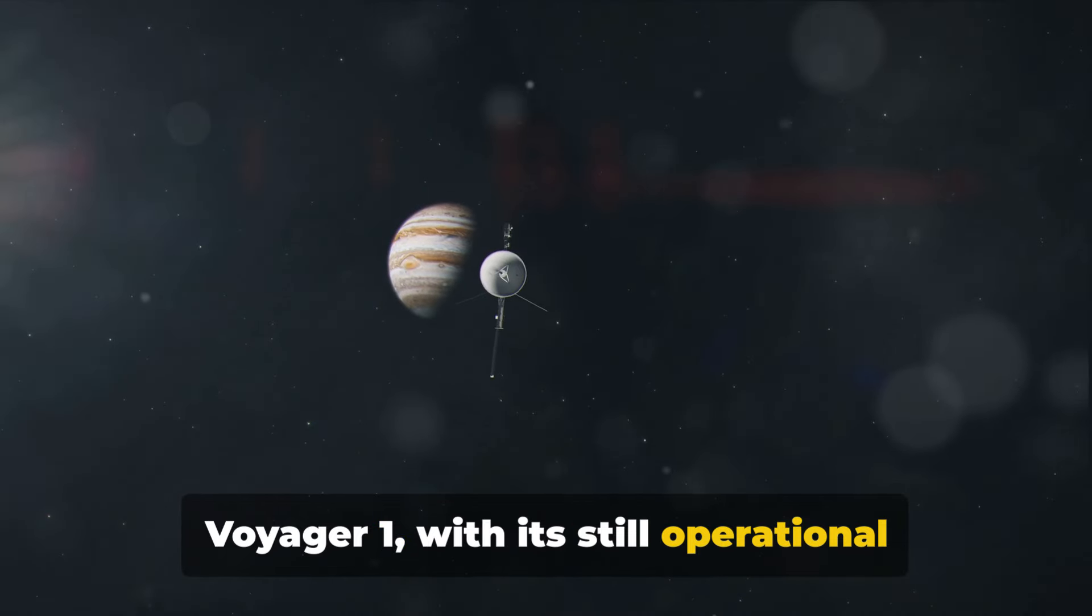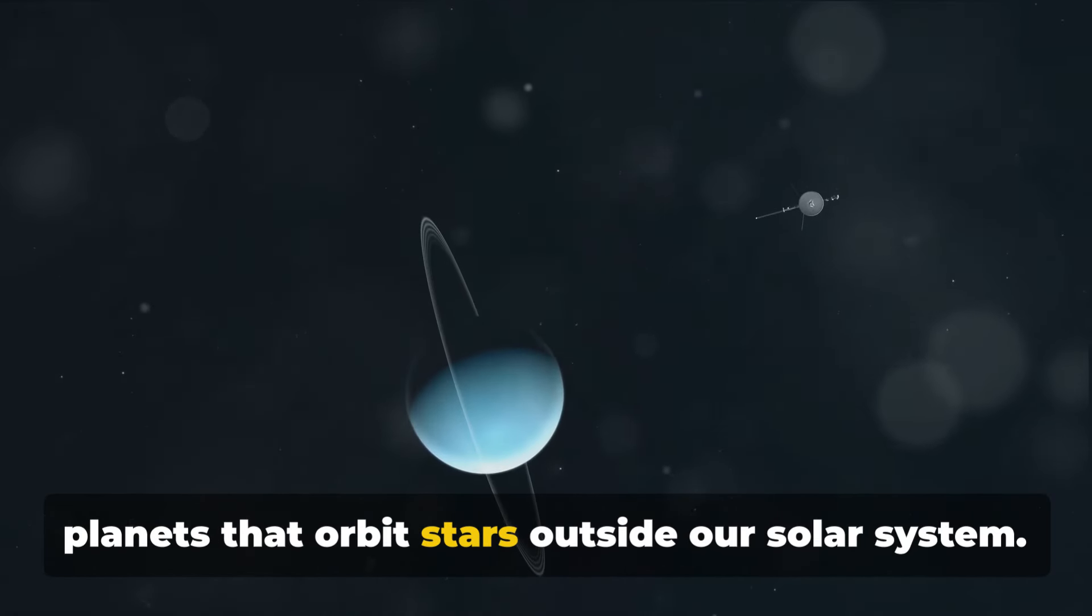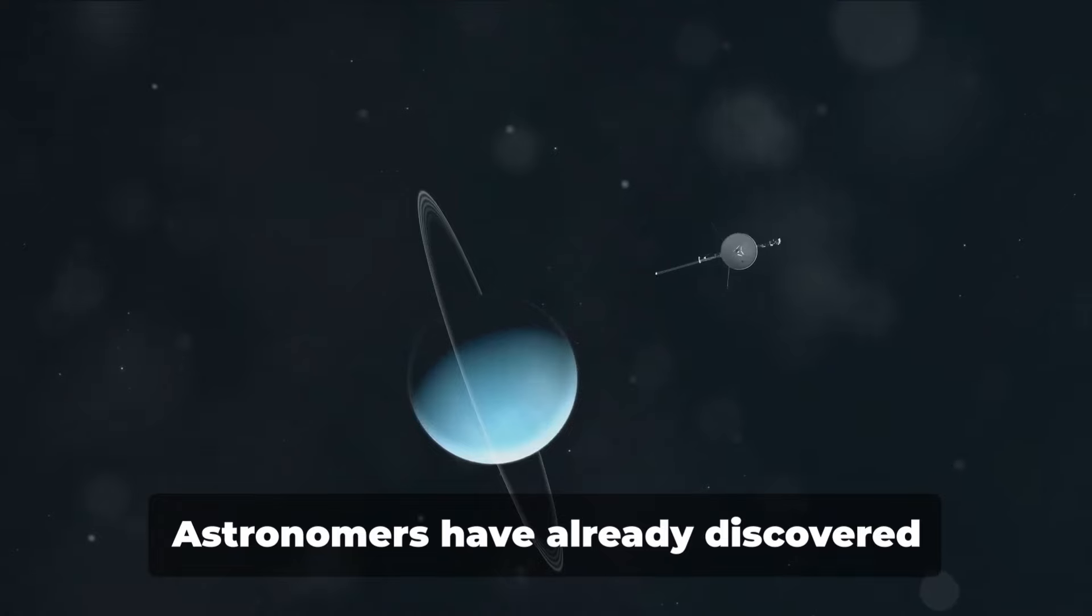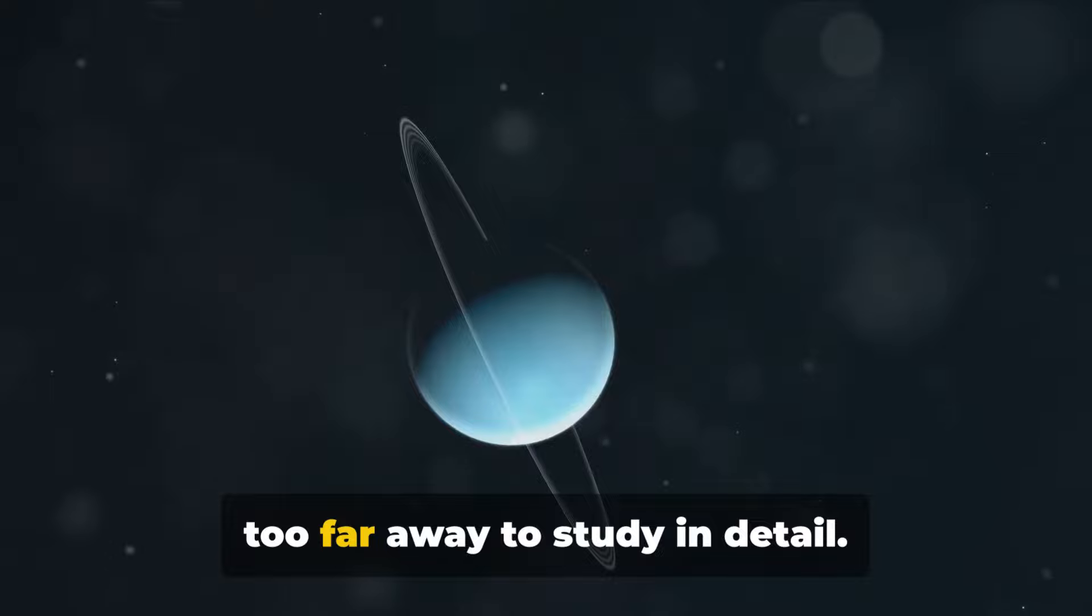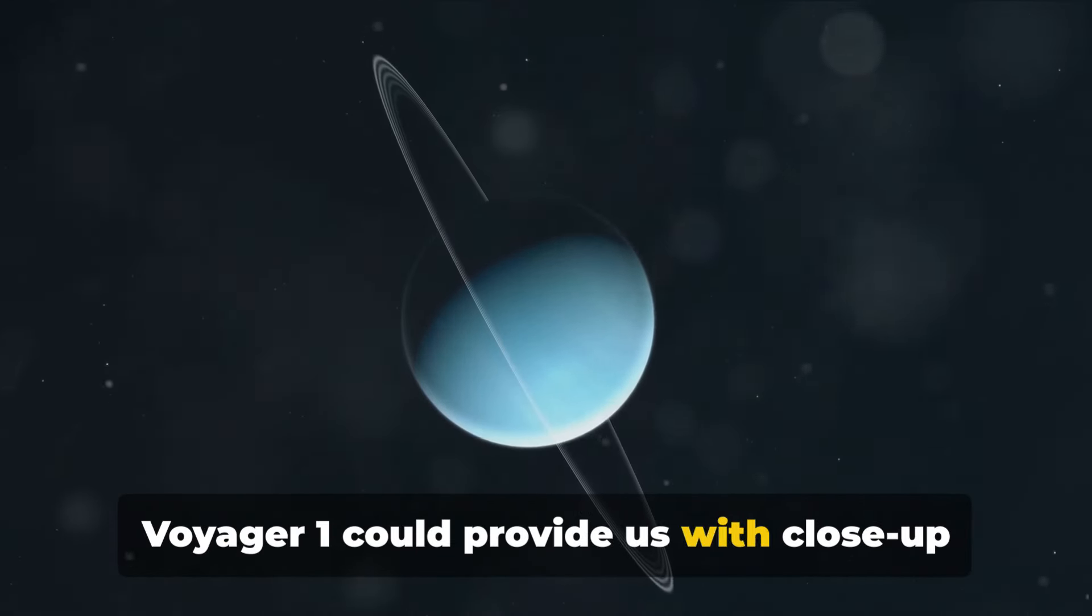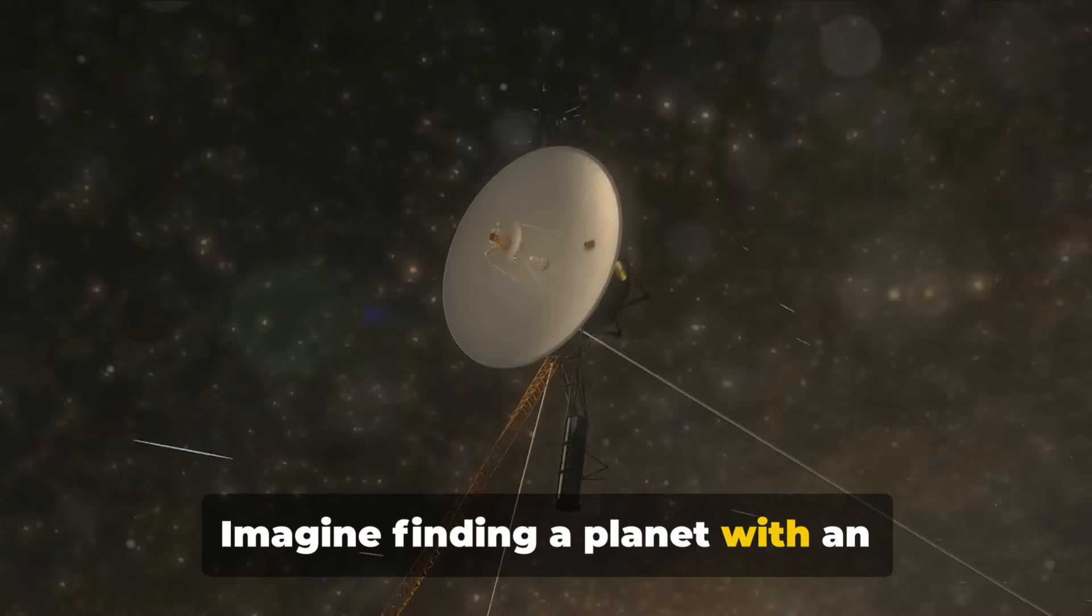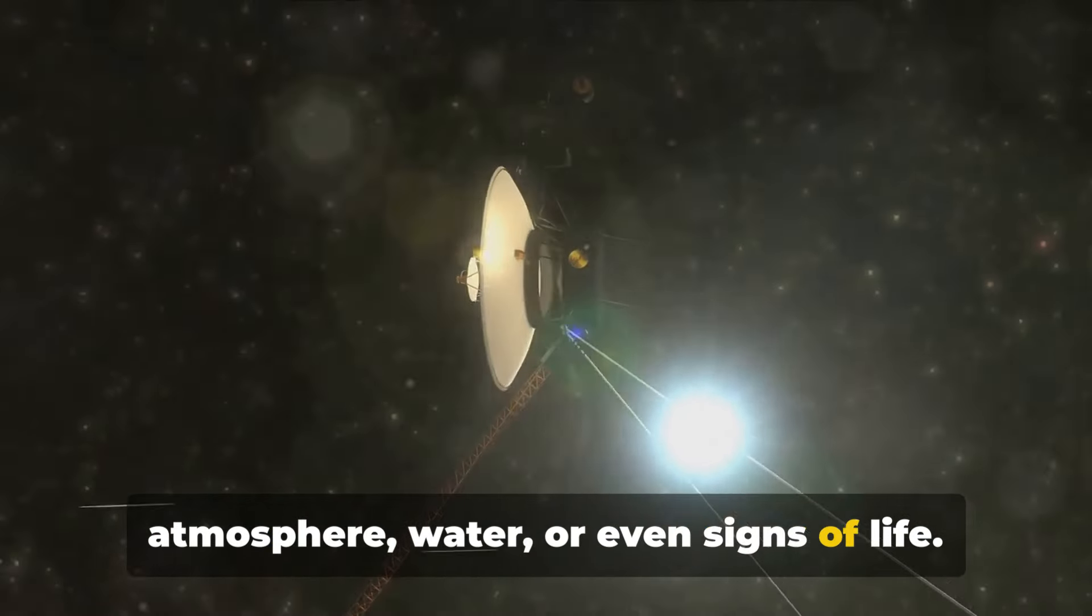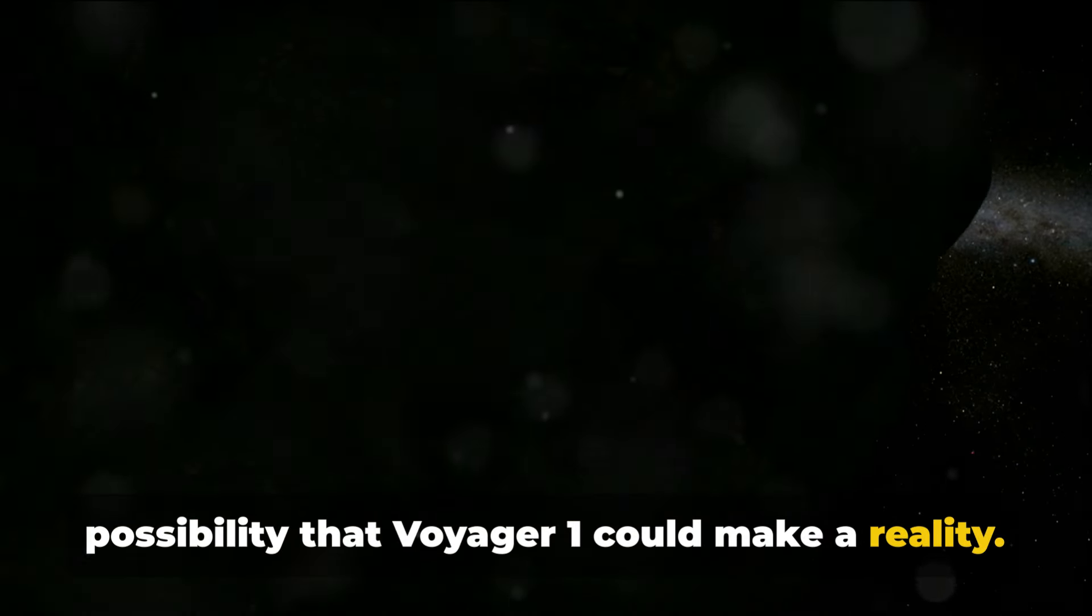But there's more. Voyager 1 with its still operational instruments could detect exoplanets, planets that orbit stars outside our solar system. Astronomers have already discovered thousands of these planets, but most are too far away to study in detail. Voyager 1 could provide us with close-up information about these distant worlds. Imagine finding a planet with an atmosphere, water or even signs of life.